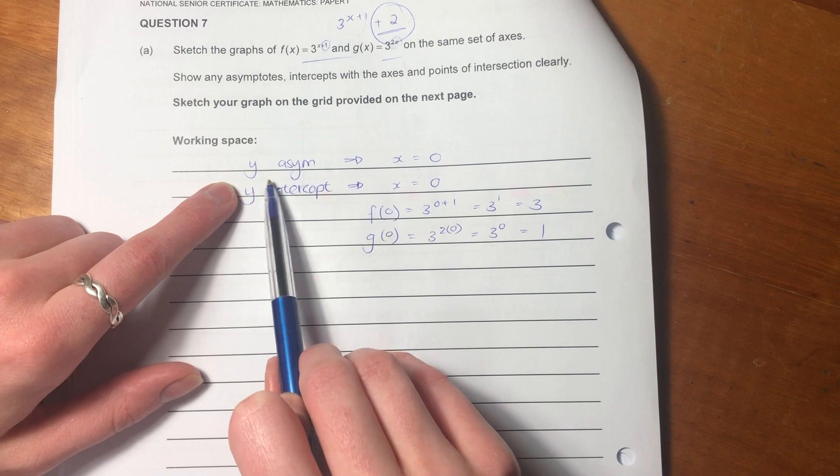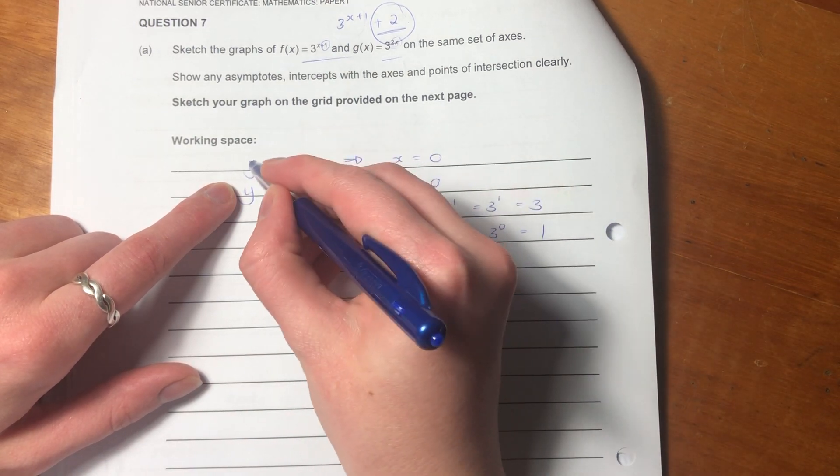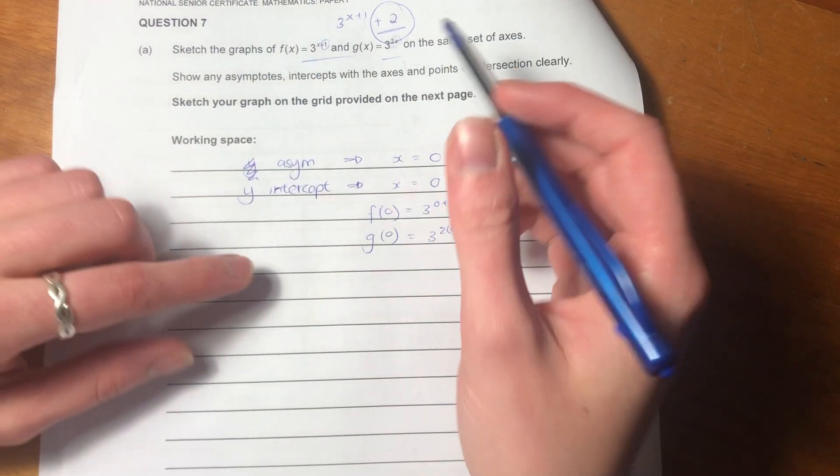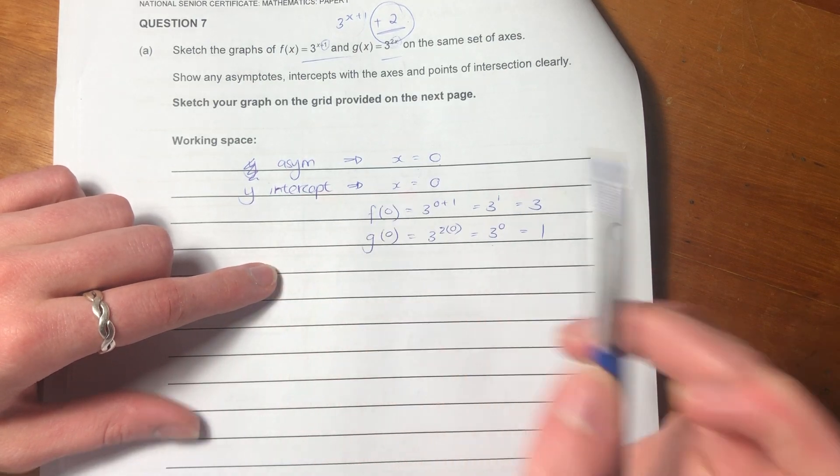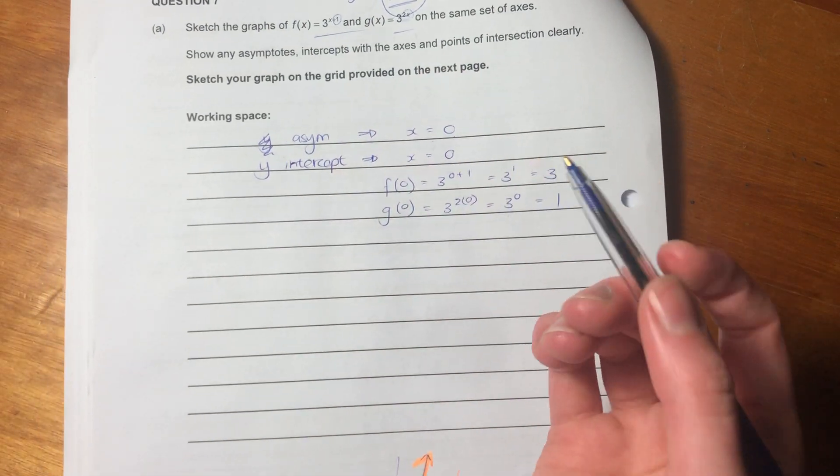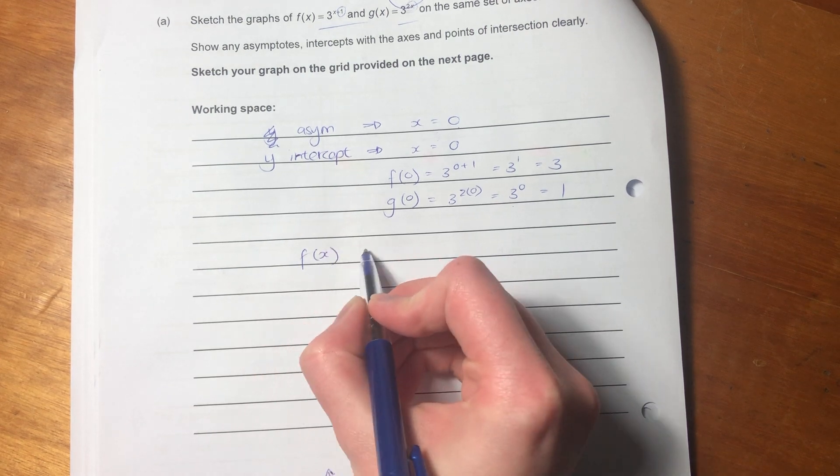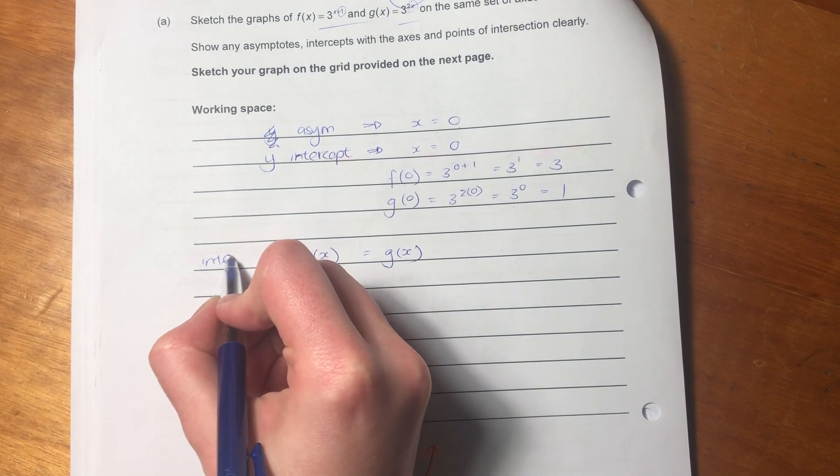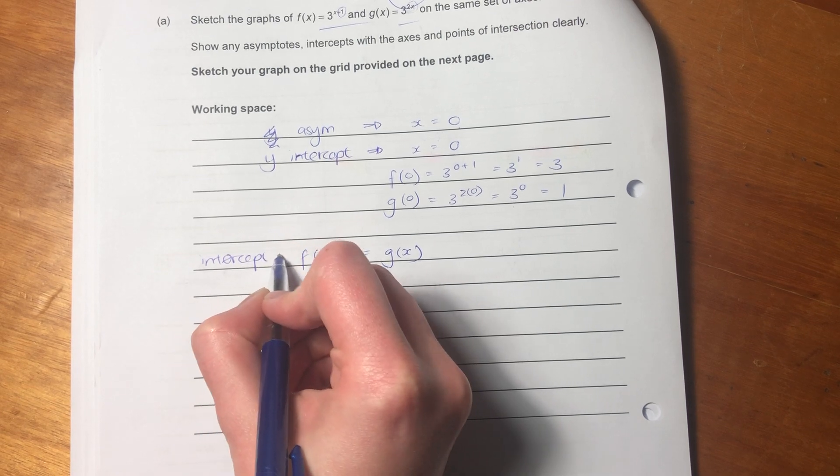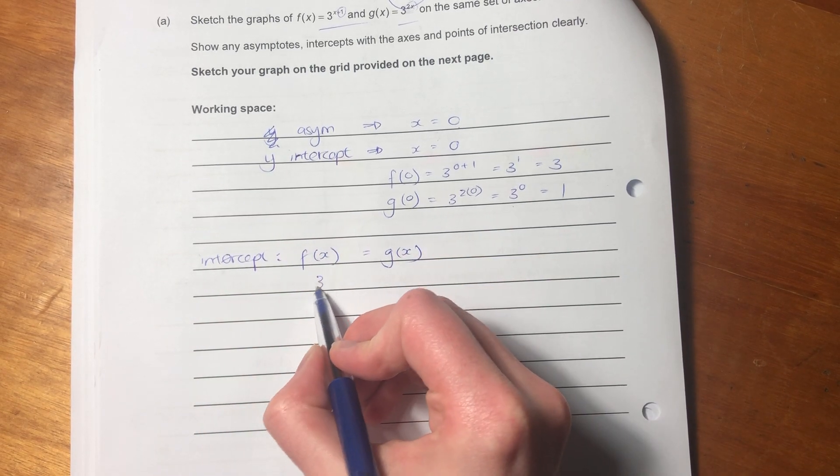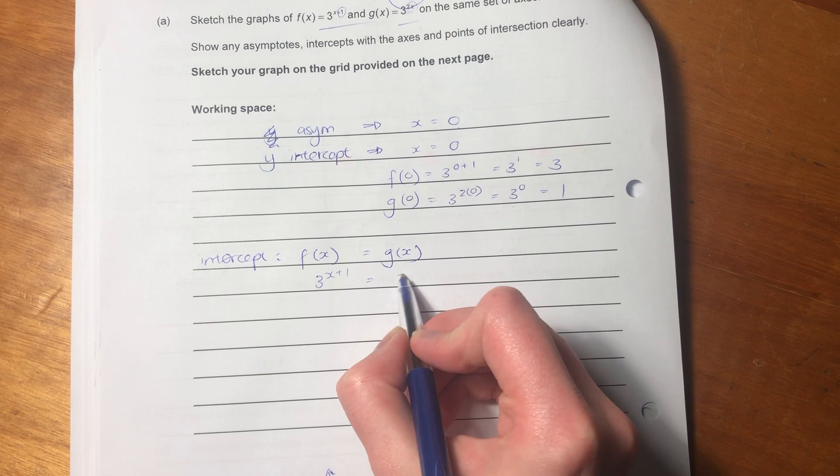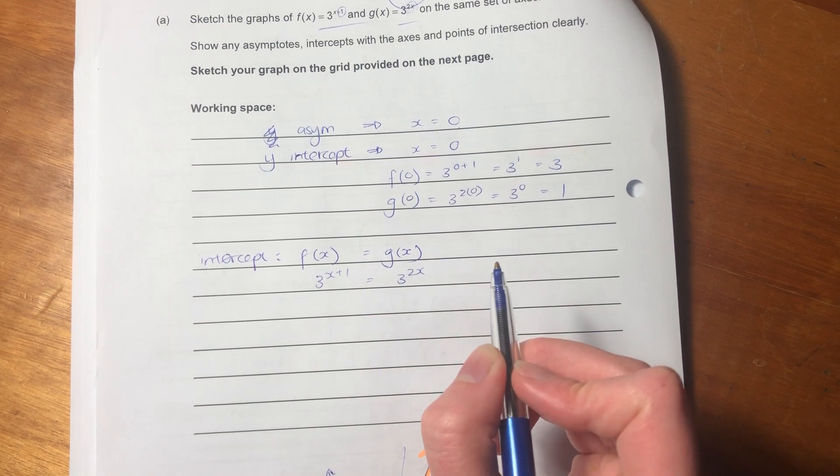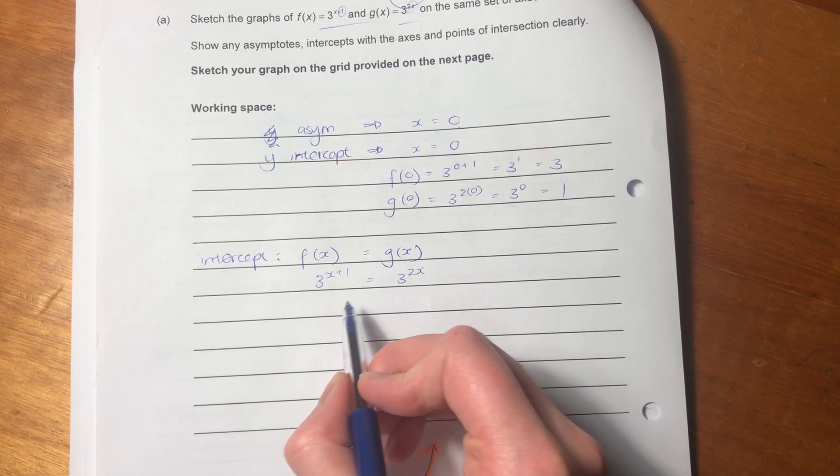Then we've got our y-asymptote. We've got the, well, you don't have to call it y-asymptote. You can just call it the asymptote is where x equals zero. We have the y-intercept. So all we need to do now is the point of intersection. So we want to know where f(x) equals g(x). I'm just going to say intercept so you know what I'm talking about.